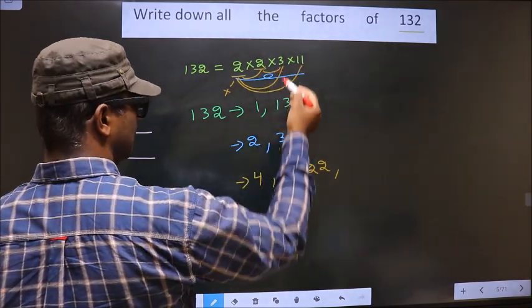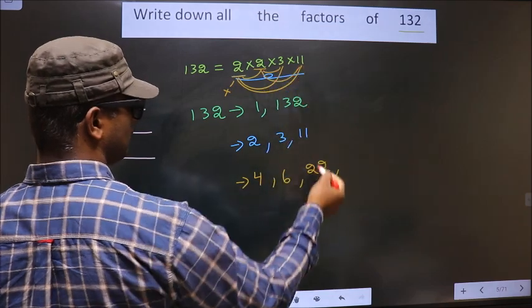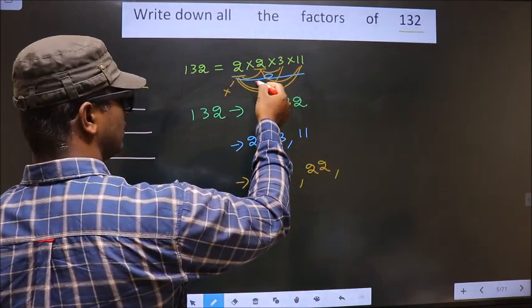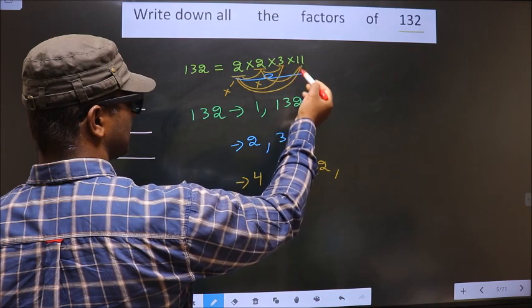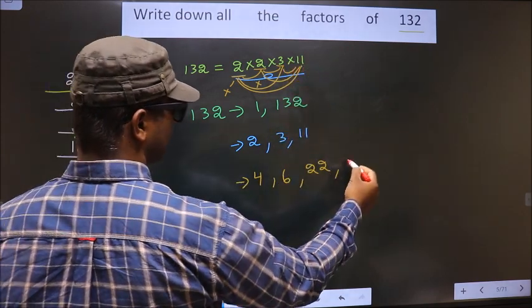Now you leave this 2 and go to the next number 2. 2 combined with 3, you get 6. 2 combined with 11, you get 22. So now you leave this 2, go to the next number 3. 3 combined with 11, you get 33.